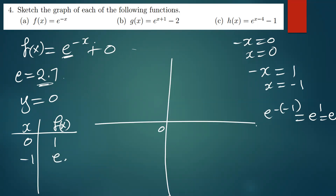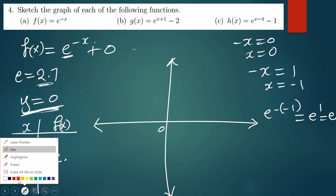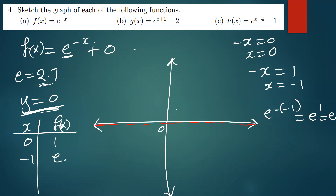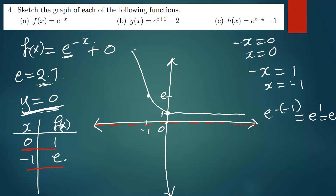Now we sketch the graph. First we draw the horizontal asymptote y equals zero, which runs along the x-axis. Then we plot the coordinates: (0, 1) goes here, and (negative 1, e) goes further up. From these two points you can see the curve moves like this — it's a decreasing exponential curve approaching the x-axis.